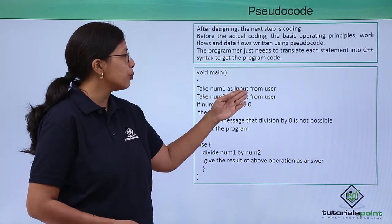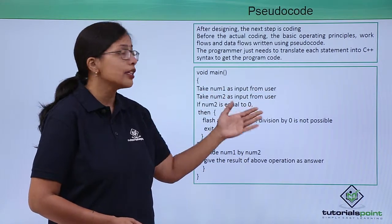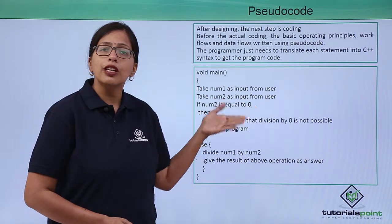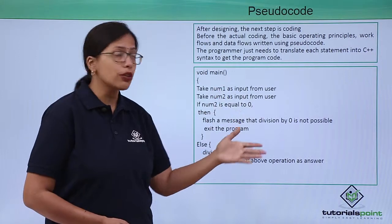Take num1 as input from user. So you've understood one number has to be taken as input. Take num2 as input from the user. So the second number has to be taken as input. If num2 is equal to 0,